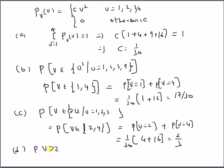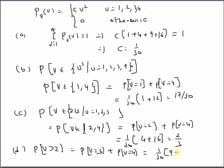Finally, we want to find the probability that v > 2, which means v = 3 or v = 4. This is P(v = 3) + P(v = 4) = (1/30)(9 + 16) = 25/30 = 5/6.